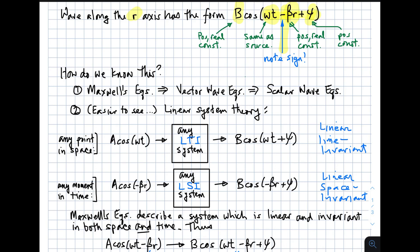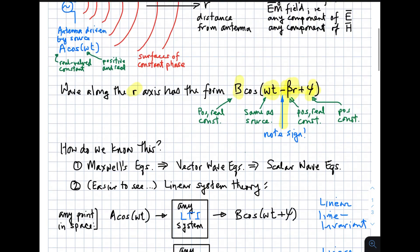So you could fairly ask, how do we know that A cosine omega t at the input yields this B cosine omega t minus beta r plus psi at the output?